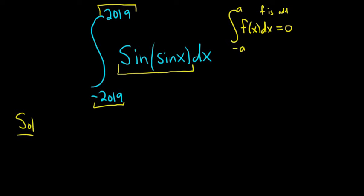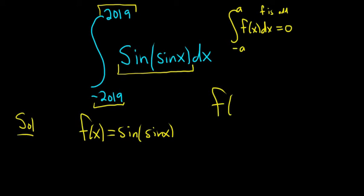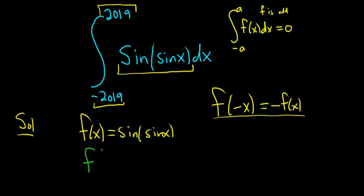We'll define f of x equal to the sine of sine of x. For a function to be odd, it must satisfy f of negative x equals negative f of x for all x in some interval. So let's plug in negative x and check.